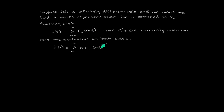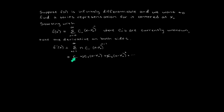The n comes down in front and the power reduces to n minus 1 for the series representation of f prime. Notice that if n starts at 0, the first term is 0 because there's an n right here. Therefore, it seems reasonable to start our summation at n equals 1 instead of n equals 0. Looking at the terms of the sum for f prime: plugging in n equals 1 gives c1, plugging in n equals 2 gives 2c2 times x minus x-naught, etc.